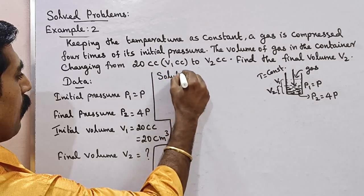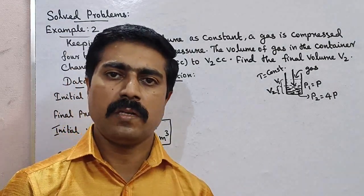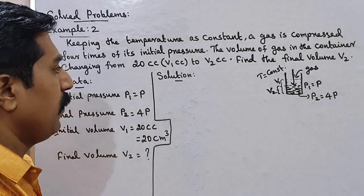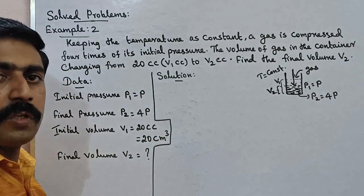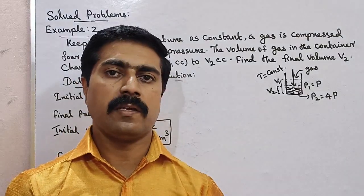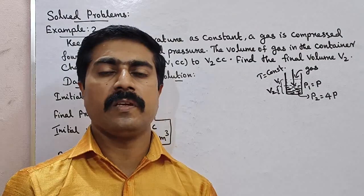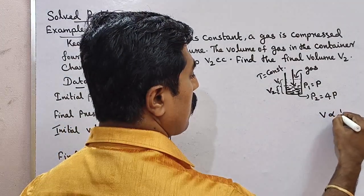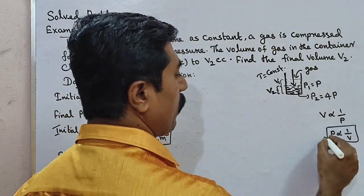Now, what concept do we apply? We can see this is Boyle's Law. When temperature is kept constant, the volume of the gas is inversely proportional to the pressure. If we put the formula — by Boyle's Law — volume is inversely proportional to pressure.